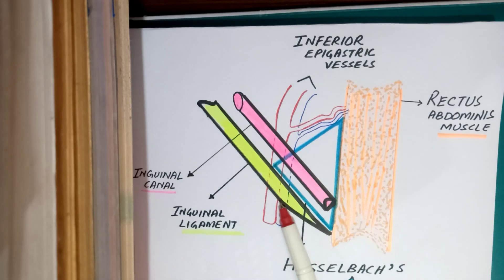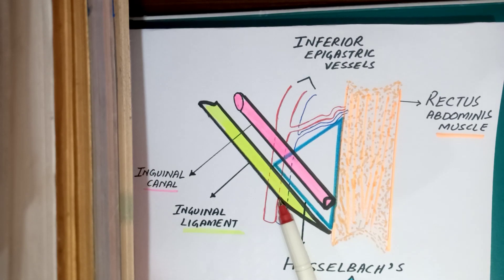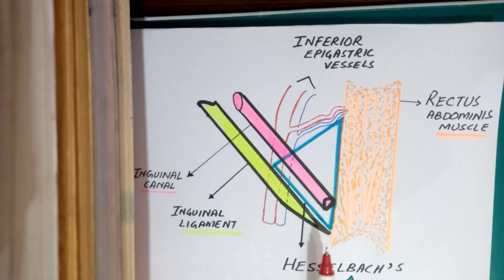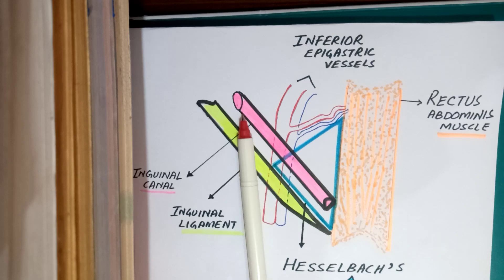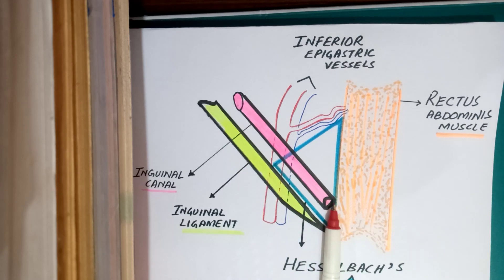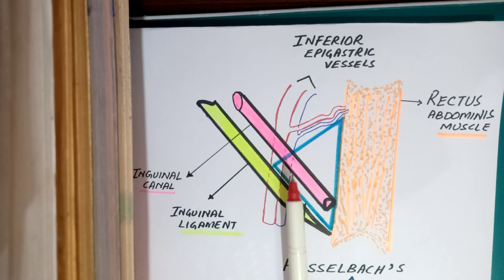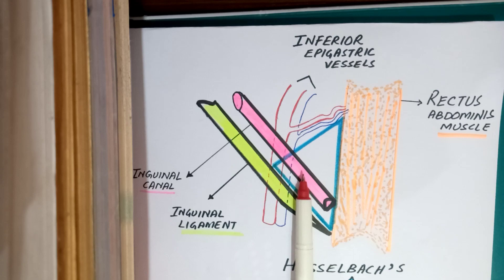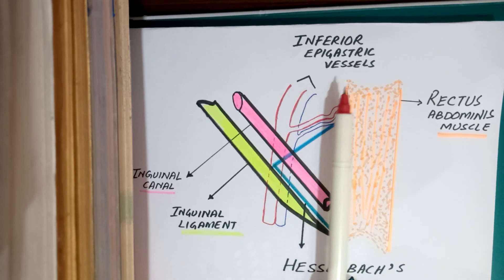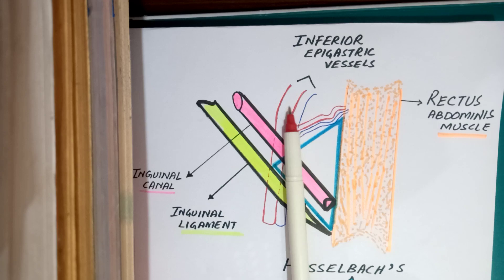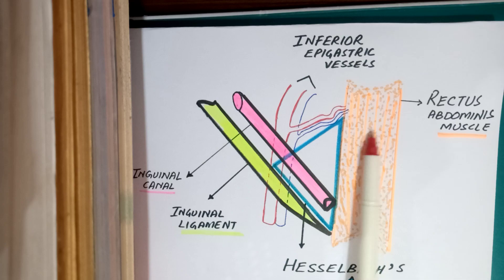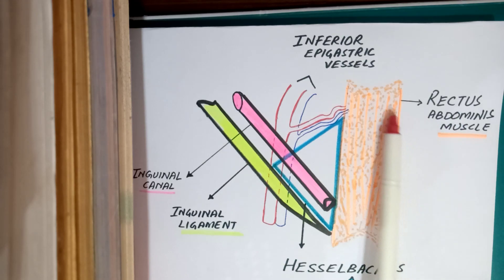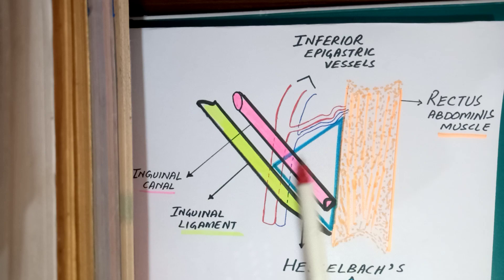You can see the inguinal ligament running from the anterior superior iliac spine to the pubic tubercle. Above that, we have the inguinal canal running from the deep inguinal ring to the superficial inguinal ring. Below the inguinal canal and inguinal ligament, there runs the inferior epigastric vessels — you can see the inferior epigastric artery and inferior epigastric vein. Medially, we have the rectus abdominis muscle.